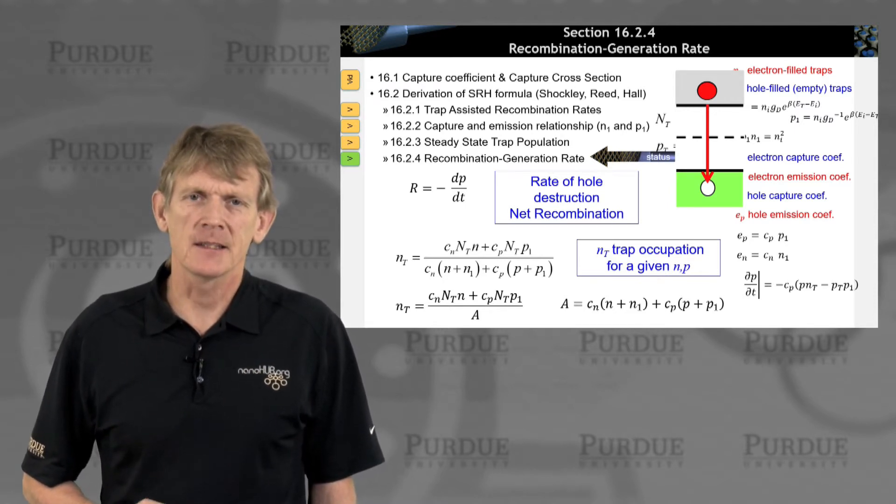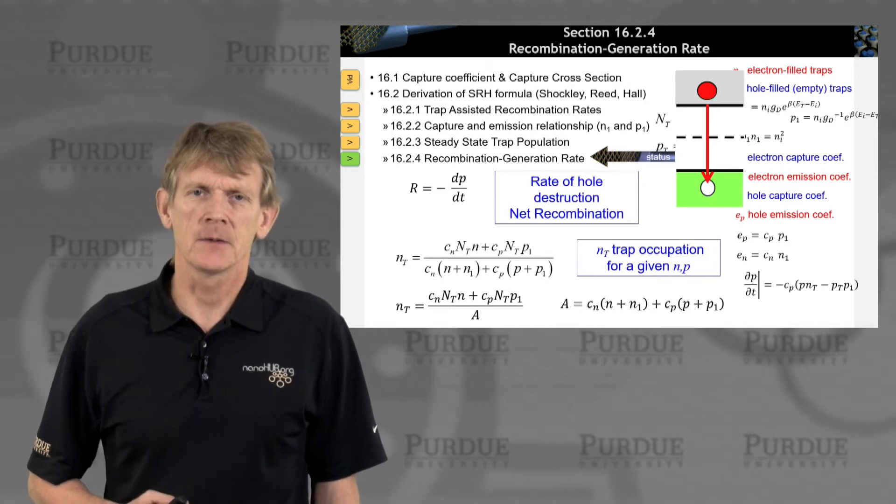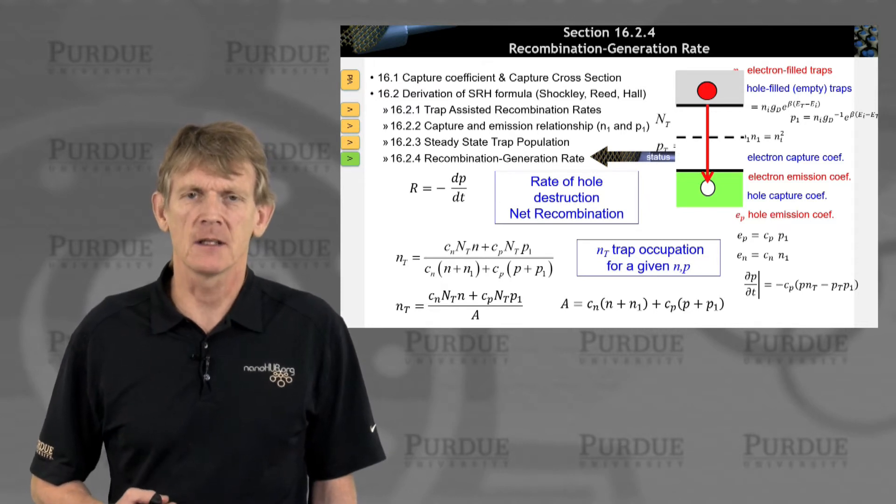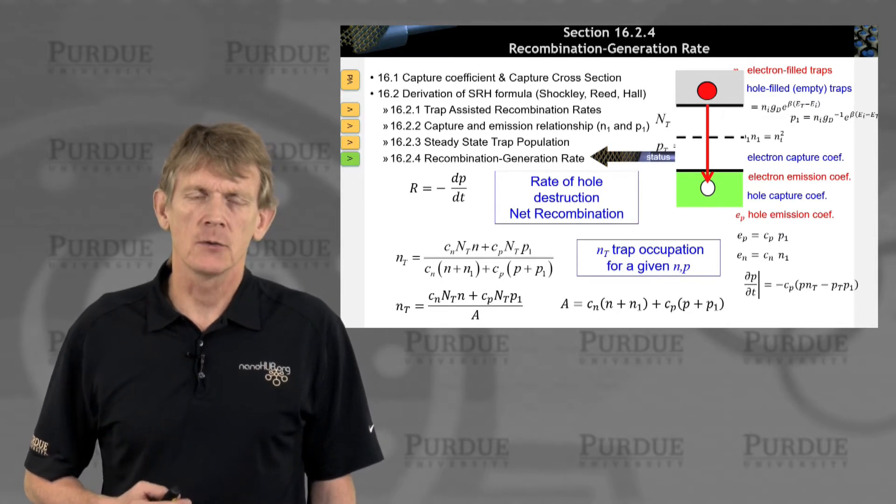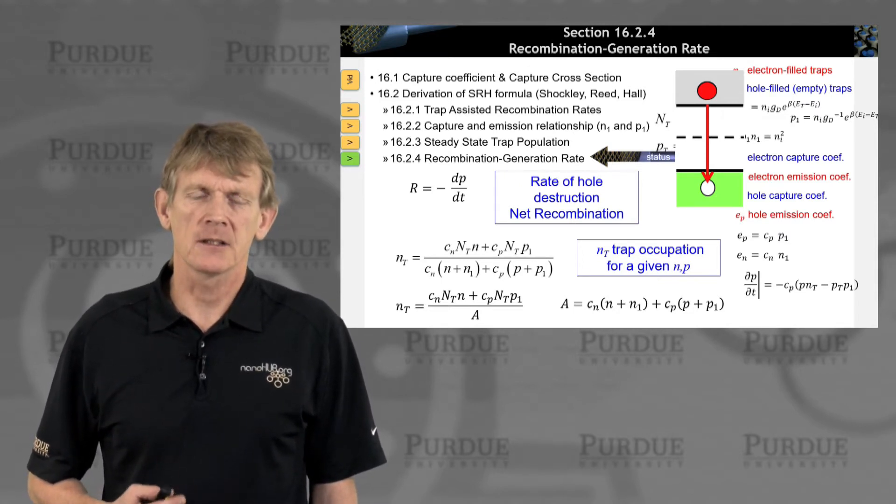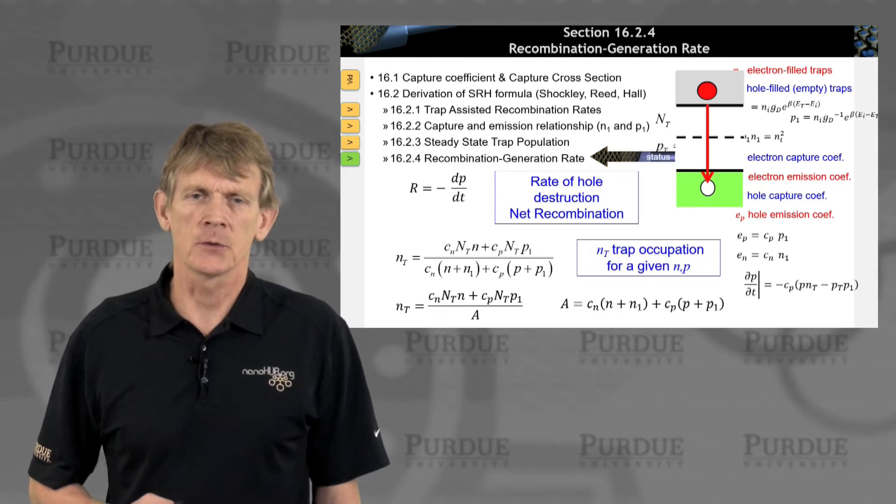Then we related the capture and emission coefficients in equilibrium, found an expression that they must be related by detailed balance. Then we used that relationship to also have emission and capture for out-of-equilibrium conditions.